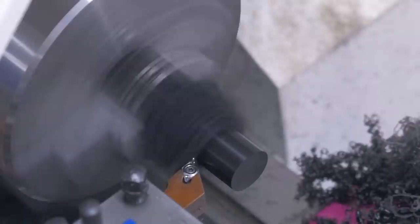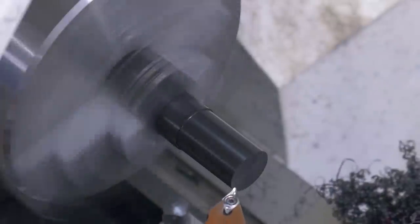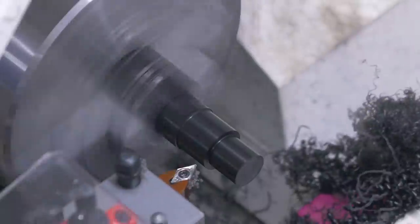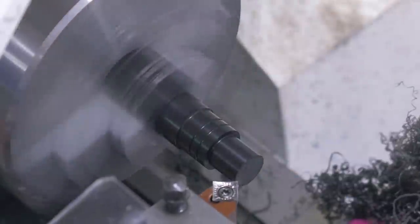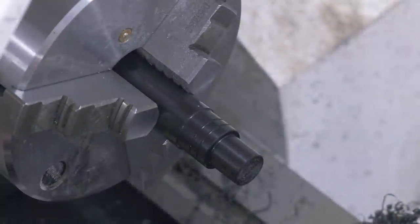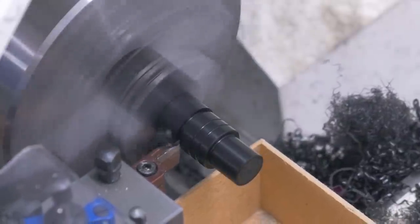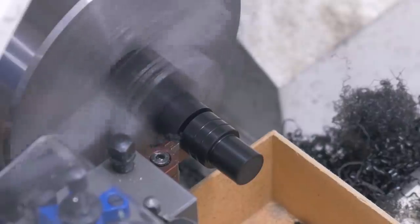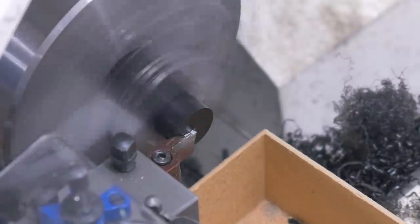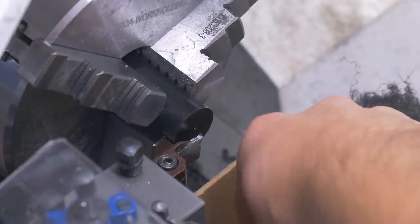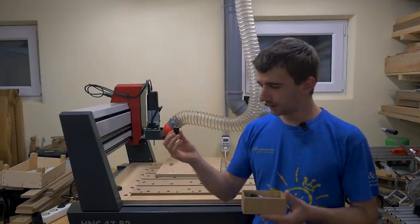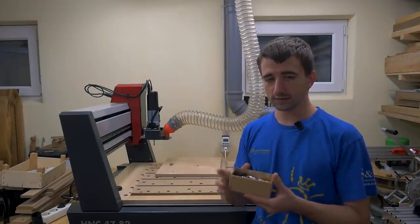And after that I also made some more dogs out of polyoxymethylene or short POM. Turning this stuff is just a breeze. And parting is no problem whatsoever. I then also turned the plastic ones to final length and made the final chamfer. And with that they are all done.